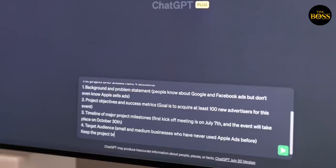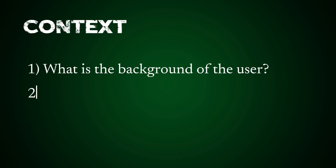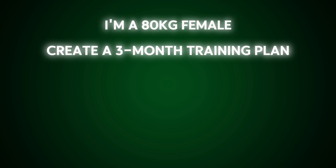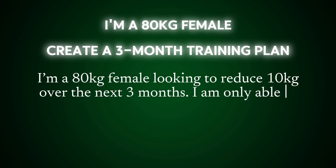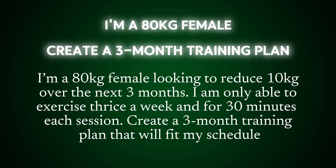The next component in prompt engineering is context. This might be the trickiest component for many people, but it can also be the most helpful if you identify the correct information to use. In writing the context, I usually ask myself: 1. What is the background of the user? 2. What does success look like? 3. What kind of environment are they in? Back to the earlier example — 'I'm an 80kg female. Create a 3-month training plan' — that's general. With more context: 'I'm an 80kg female looking to reduce 10kg over the next 3 months. I am only able to exercise thrice a week and for 30 minutes each session. Create a 3-month training plan that will fit my schedule.' The key is to give just enough information — sometimes less is more.